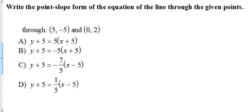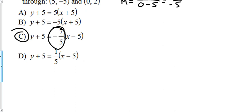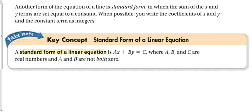Quick problem: find the slope from two points. We compute (2 − (−5)) / (0 − 5) = 7 / (−5) = −7/5. Looking at the answer choices, the only option with slope −7/5 is our answer, and we can plug the point in to complete the full equation.